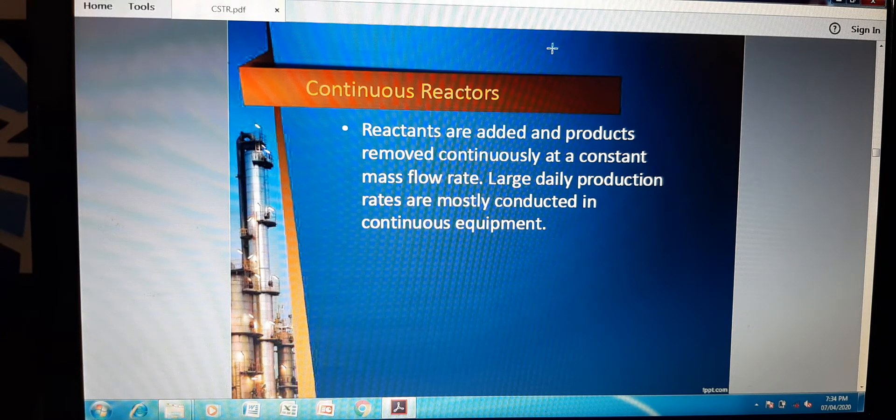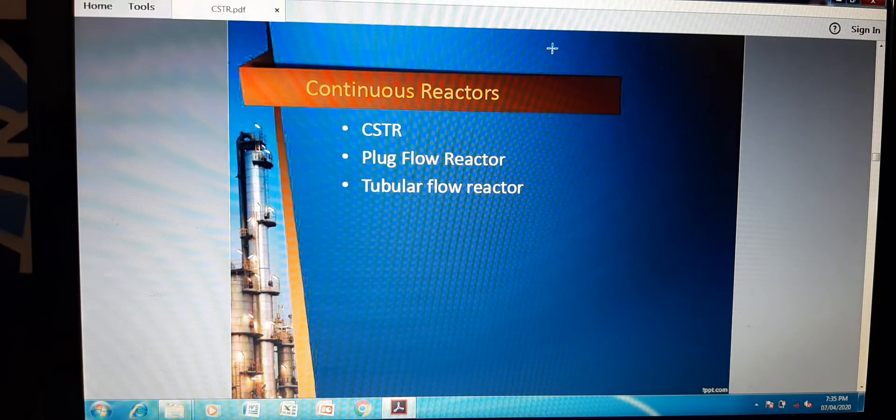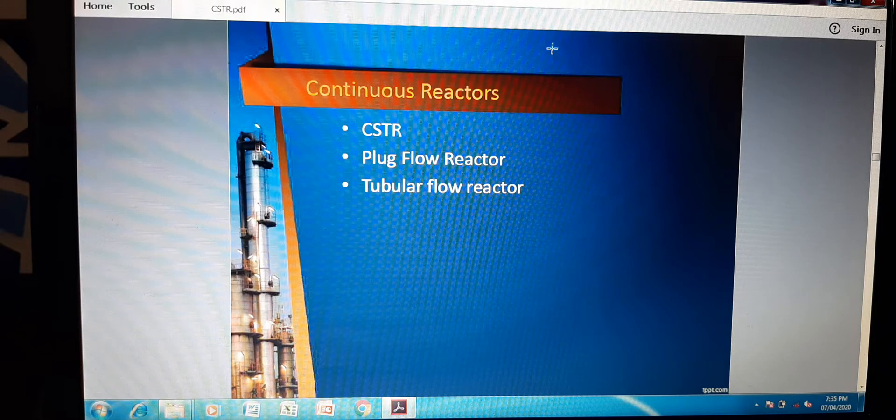This is the continuous process of continuous reaction. In continuous reactors, there are three types: CSTR (continuous stirring tank reactor), plug flow reactor, and tubular flow reactor.